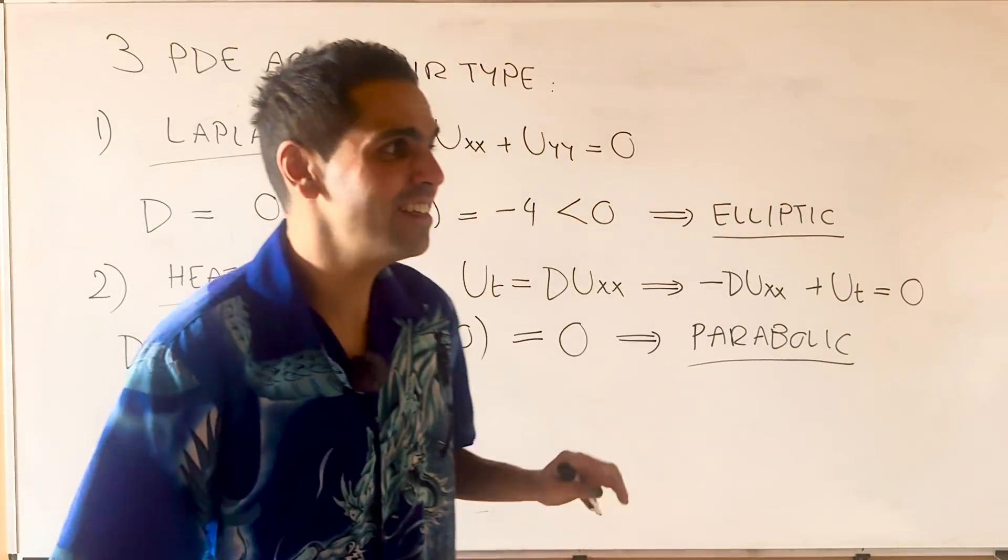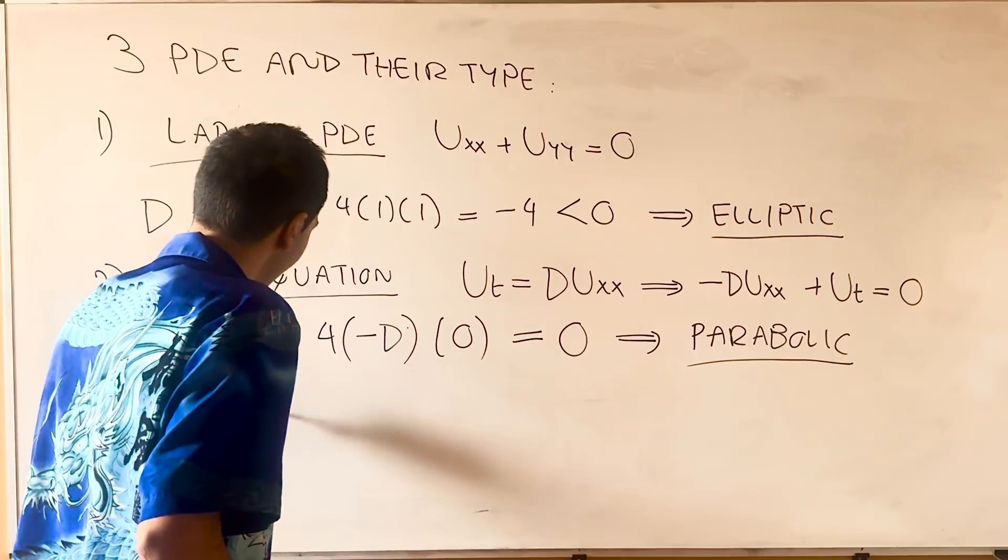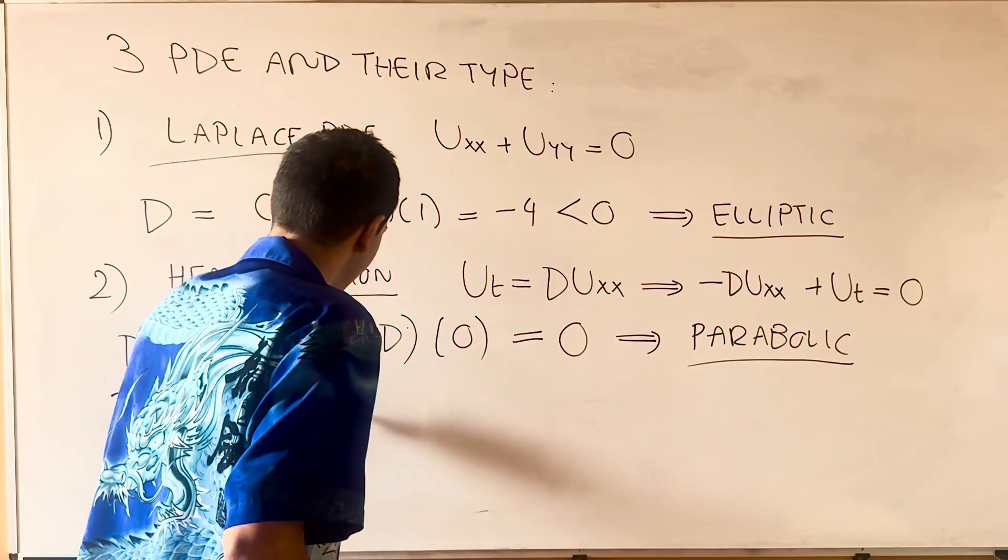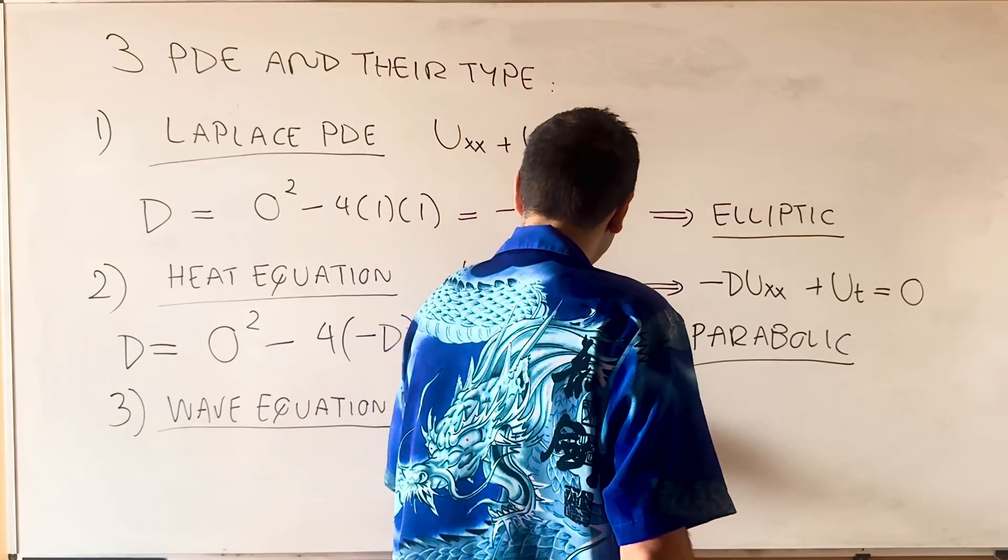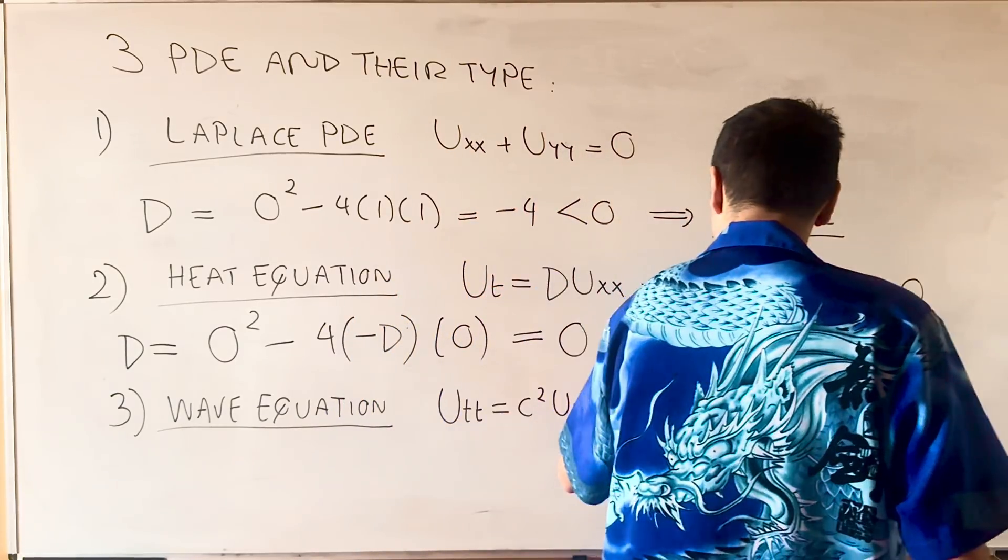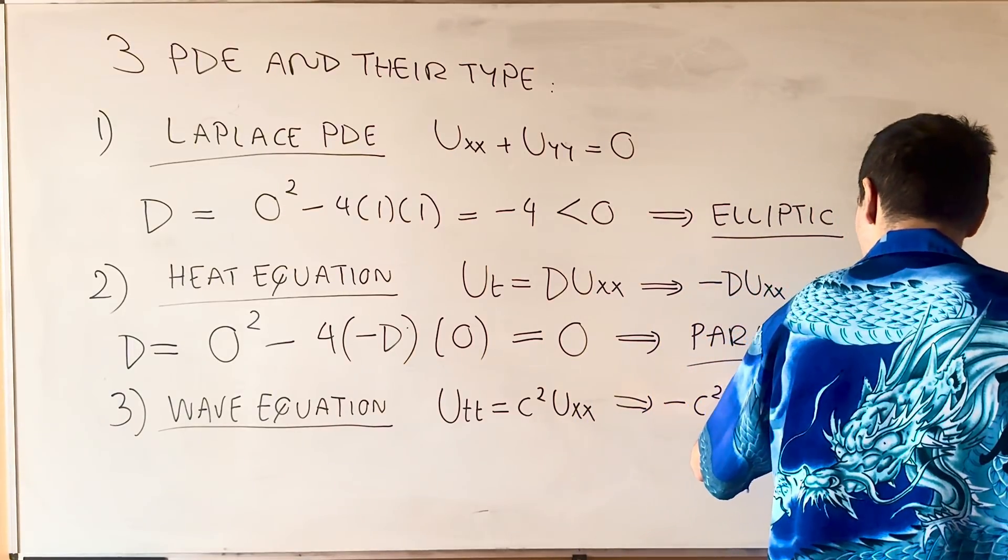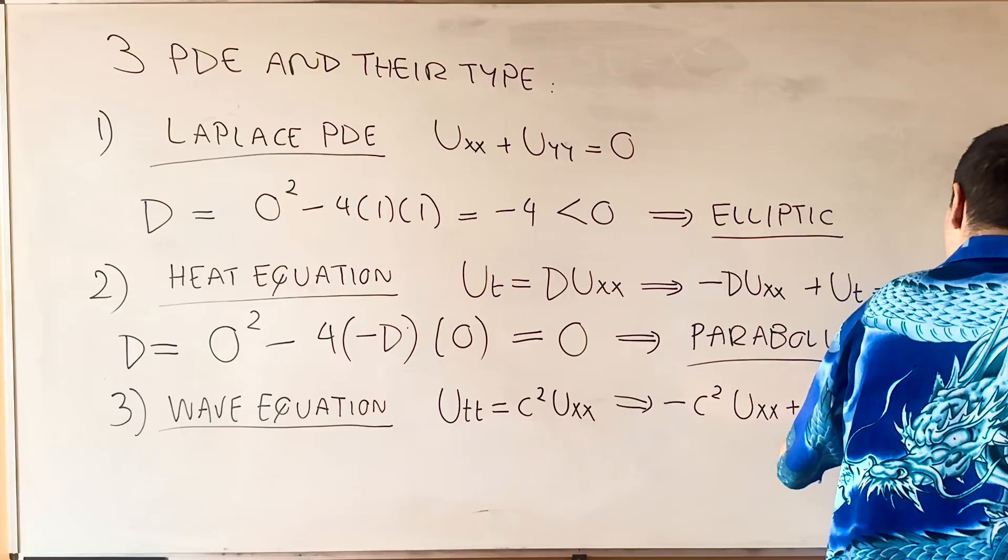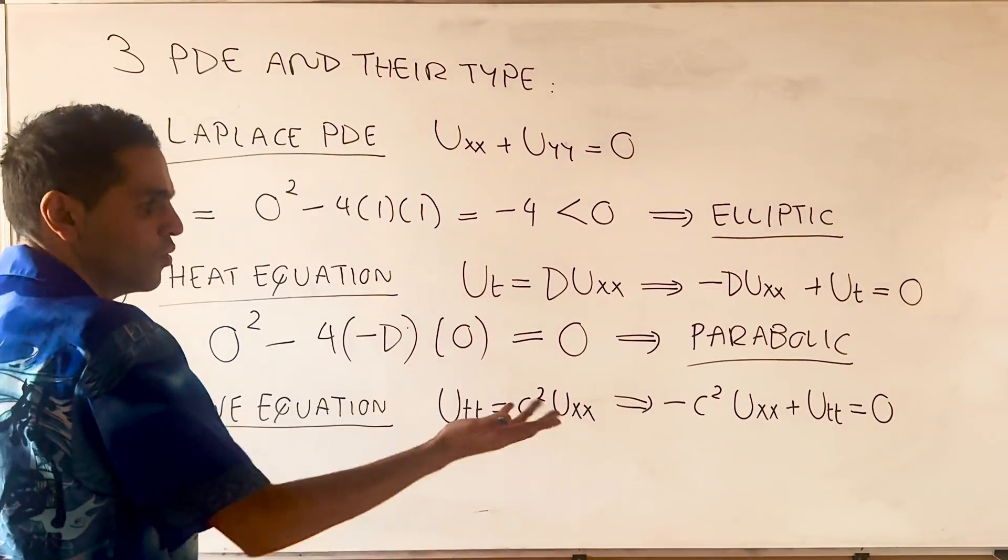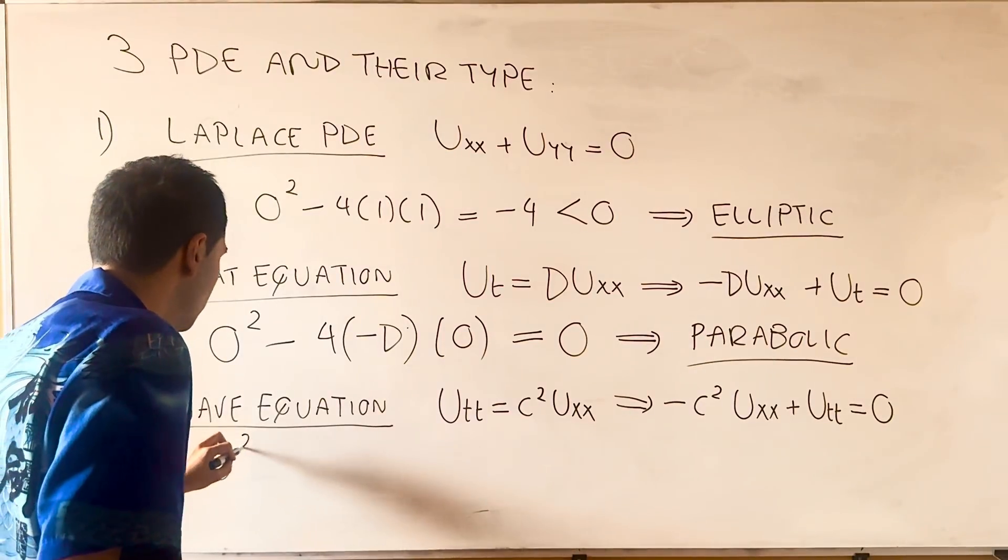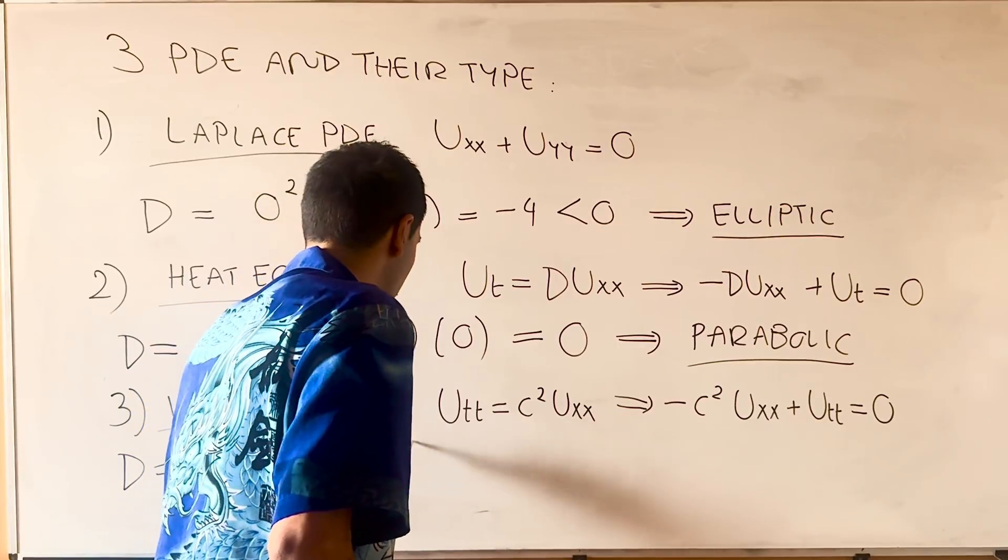Last but not least, you may have guessed it, there is the wave equation. In this case, U_TT equals c²U_XX, which is really minus c²U_XX plus U_TT equals 0. The discriminant - again, there's no XT term - is 0² minus 4 times minus c² times 1.